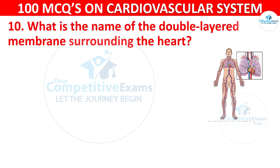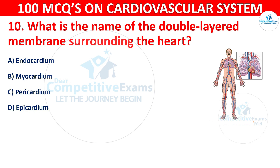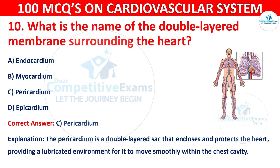Q10. What is the name of the double-layered membrane surrounding the heart? Options are: endocardium, myocardium, pericardium, or epicardium. The correct answer is C — pericardium. The pericardium is a double-layered sac that encloses and protects the heart, providing a lubricated environment for it to move smoothly within the chest cavity.